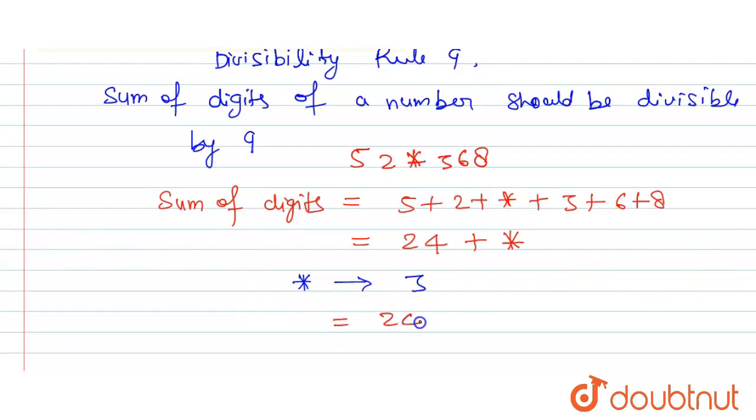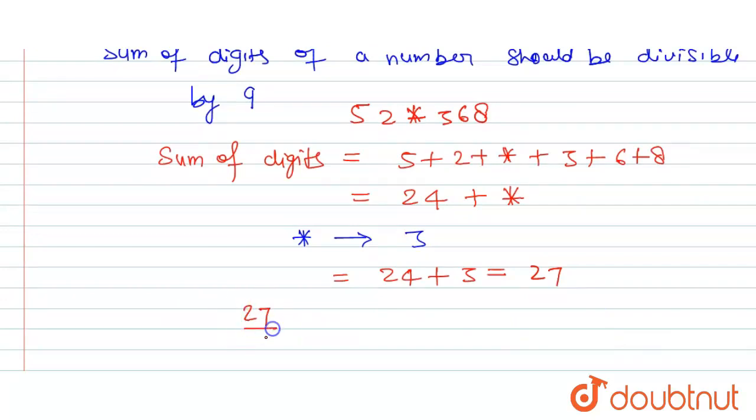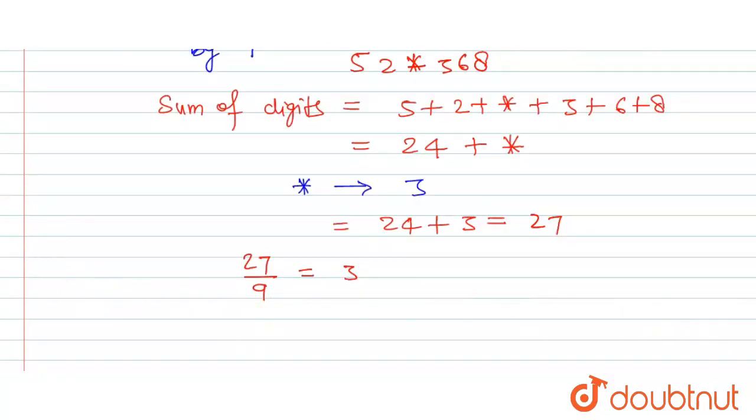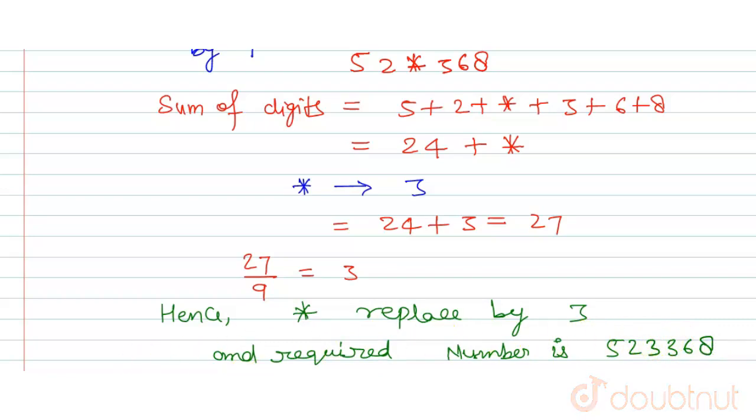Now let's check if 27 is divisible by 9 or not. Yes, this is a multiple of 9. Hence star is replaced by 3, and the required number is 523368. This is the answer for this question. Thank you.